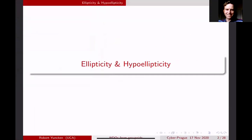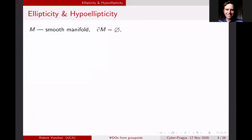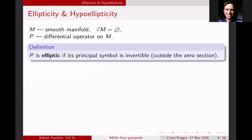Let's start by talking about ellipticity and hypo-ellipticity, which is the motivation for all this work. M is going to be a smooth manifold without boundary, perhaps compact if I want to make things even nicer. And P is going to be a differential operator on M.